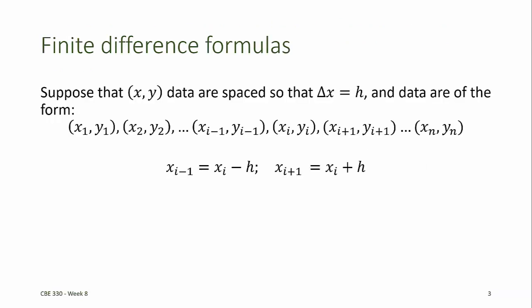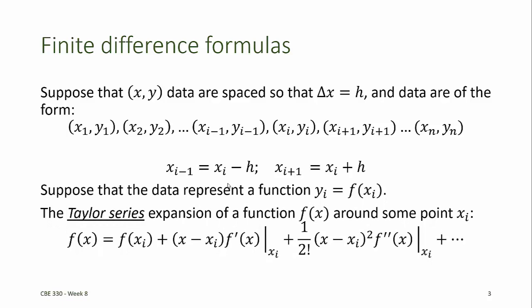If a sequence of x-y data are equally spaced — that is, the delta x are all equal to some constant h between data points — and the data are ordered pairs x1, y1 through xn, yn, then for each pair of adjacent points the difference between successive values in the x direction is h. If these data represent some unknown function f of x, then we can write the Taylor series expansion of f of x around a point xi.